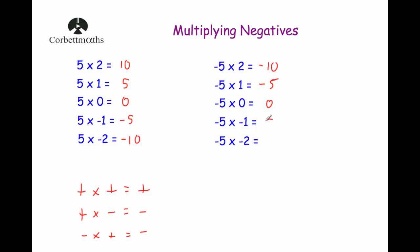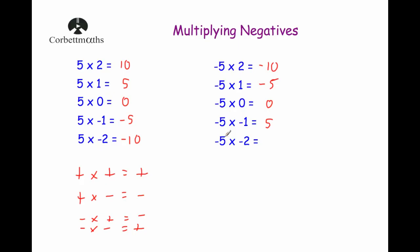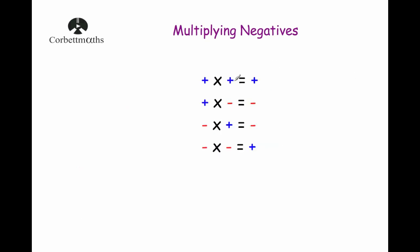So our next answer should be 5 — that's negative 5 times negative 1. A negative times a negative gives us a positive. And then finally, negative 5 multiplied by negative 2 equals 10, because a negative times a negative is equal to a positive. So the rules are: positive × positive = positive, positive × negative = negative, negative × positive = negative, and negative × negative = positive.